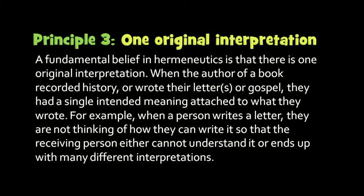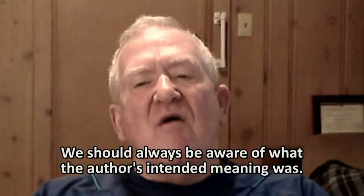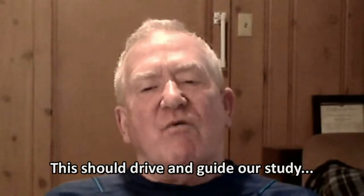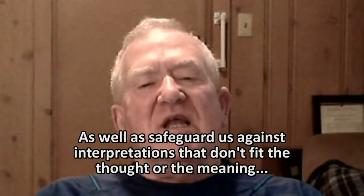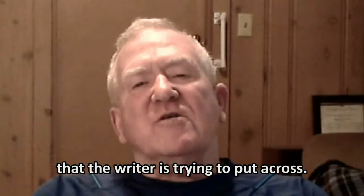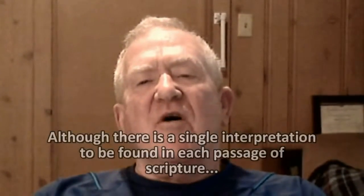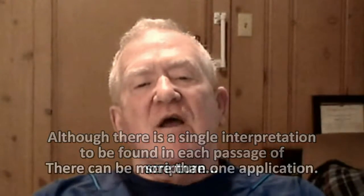Principle 3: One Original Interpretation. A fundamental belief in hermeneutics is that there is one original interpretation. When the author of a book recorded history, wrote letters, or wrote the gospel, they had a single intended meaning attached to what they wrote. When a person writes a letter, they're not thinking about how to write it so the person on the receiving end ends up with many different interpretations. There is a particular meaning in what's written — the interpretation is restricted by the writer's intention. When rightly dividing the Word of God, we should always be aware of what the author's intended meaning was. This should drive and guide our study and safeguard us against interpretations that don't fit the thought the writer is putting across. Although there's a single interpretation to be found in each passage, there could be more than one application.